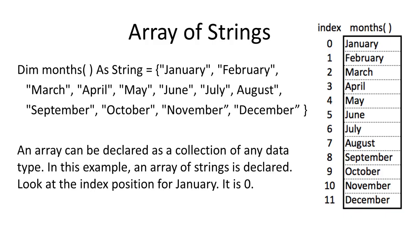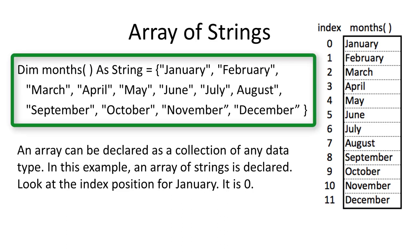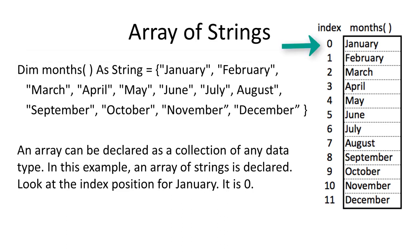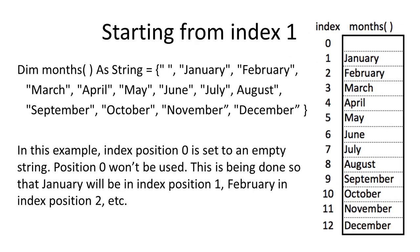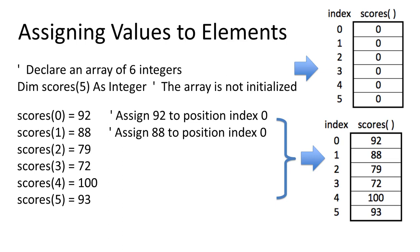An array can be declared as a collection of any data type. In this example, an array of strings is declared. Look at the index position for January — it is zero. If you want to start counting from one instead of zero, the easiest thing to do is just ignore the first position in an array. Index position zero is set to an empty string and won't be used, so that January will be in index position one, February in index position two, etc.